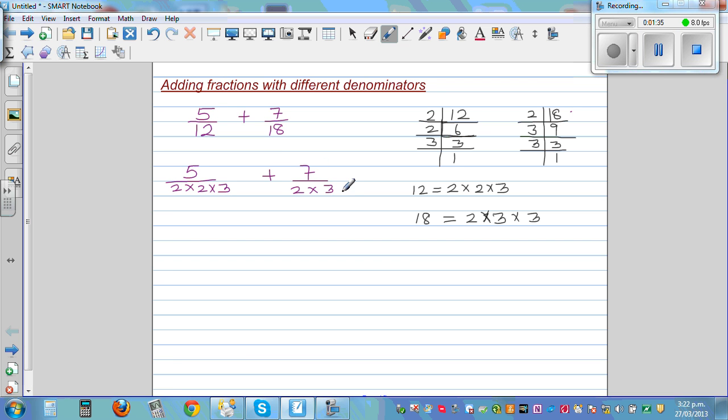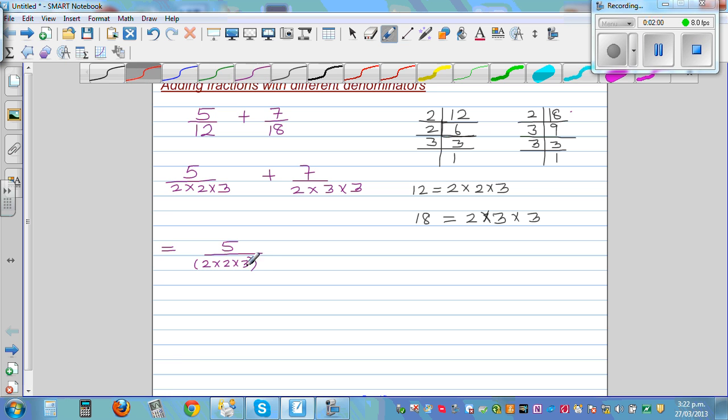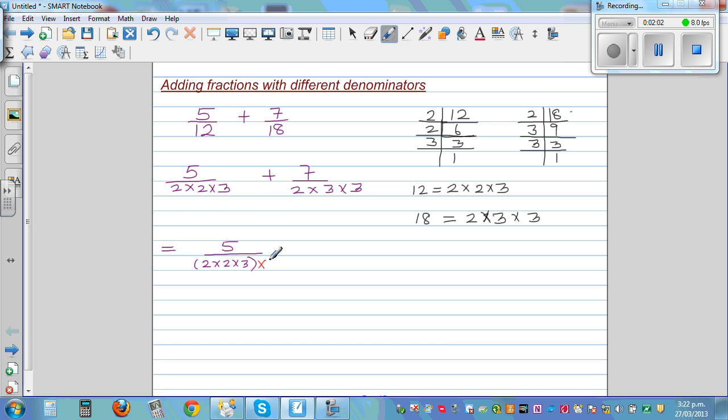So the next step is, I'm going to do a method called the method of jealousy. So I'm going to write this as 5 over 2 times 2 times 3 in brackets. And then I'll look across to the next denominator. This has got a 2, this has got a 3, and this has got one more 3.